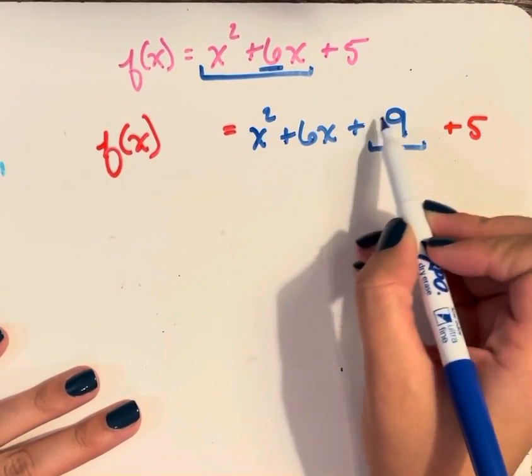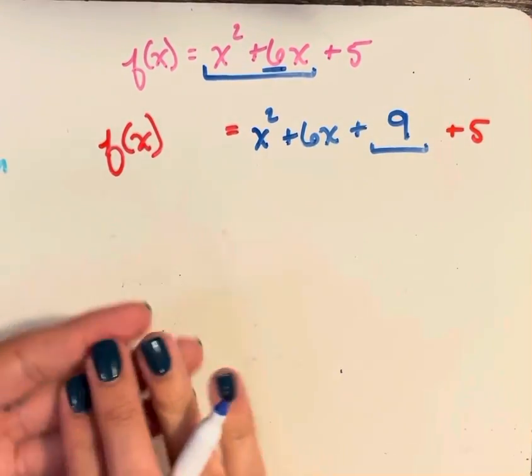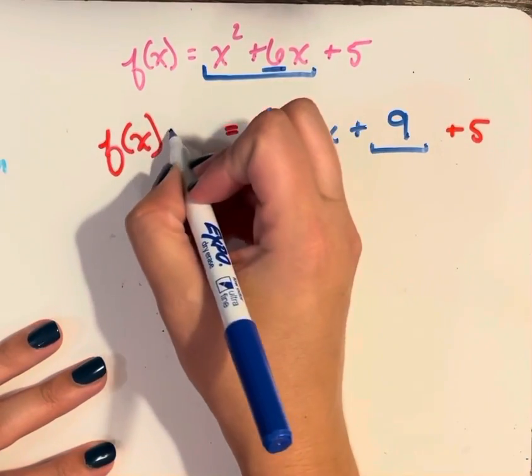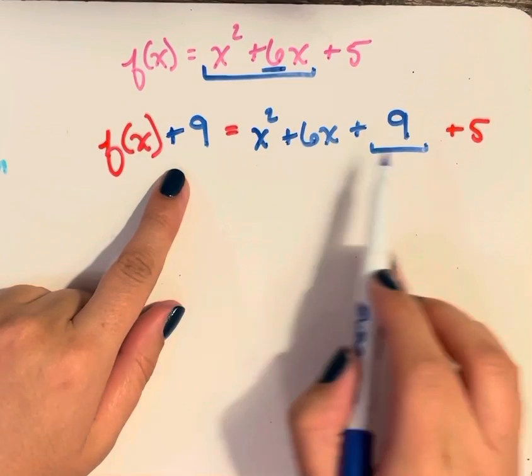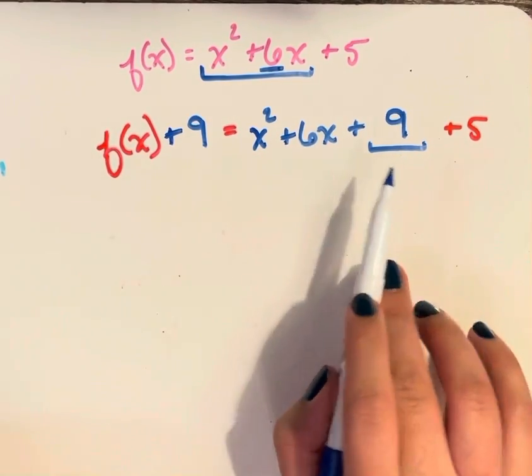Since I added 9 here on the right side of my equation, I have to maintain that equality. So I have to add the same thing on the left side. So I've added 9 to both sides of my equation.